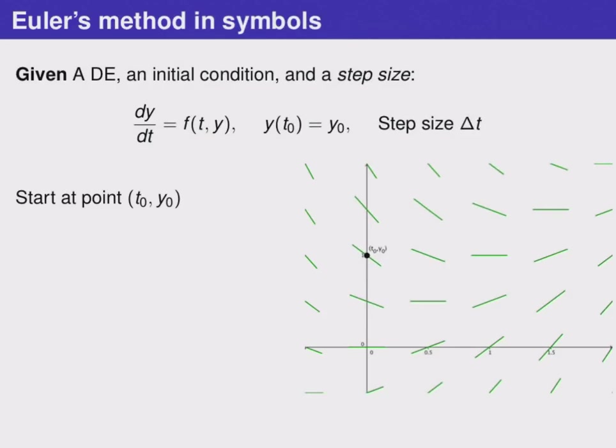Now let's take a look at how Euler's method works using some formulas that allow us to repeat these calculations precisely. In this method, we're given a differential equation, an initial condition, and a step size called delta T. This is the short horizontal distance that we'll be following. We'll start at our given point T0, Y0.